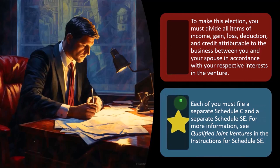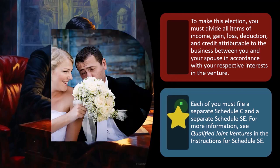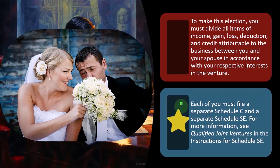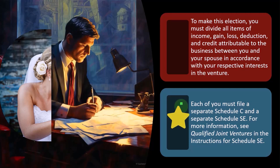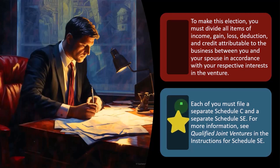Each of you must file a separate Schedule C. You would think the easy thing to do is to say, we're married, we're going to file one Schedule C and basically allocate between the two with regards to the income for our contribution to Social Security, basically evenly, because we're married. You might be able to do that under the community property rules, but here we're saying two Schedule Cs.